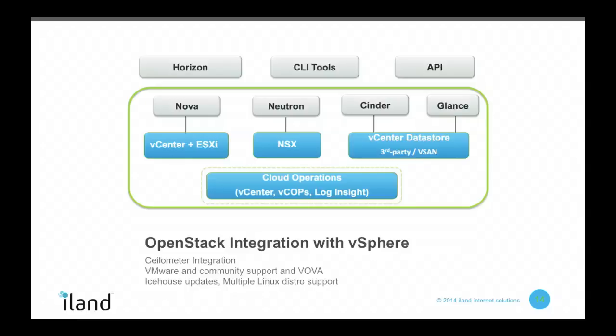When you want to spin up a VM in Horizon, it's actually going to make an API call to vCenter, do the work, and bring the VM online. Some of the cloud operations capabilities I talked about - making sure customers get the performance they need - is where these other VMware products come in, and we use these extensively.